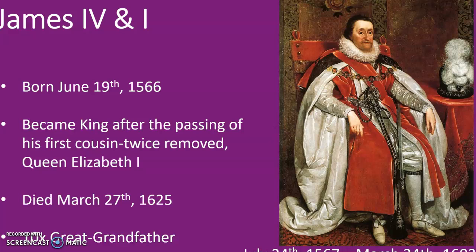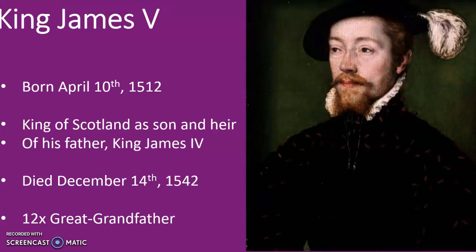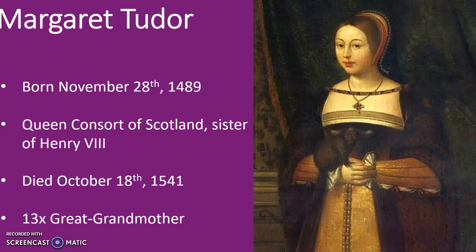James was sixth in line to become monarch of England because his mother, Mary Queen of Scots, was Queen of Scotland in her own right. She was the daughter of King James V of Scotland, and King James V was the son of King James IV of Scotland and his wife Margaret Tudor. Margaret Tudor was the sister of King Henry VIII and the queen consort of Scotland, having been married to King James IV. And Margaret Tudor was the daughter of King Henry VII.